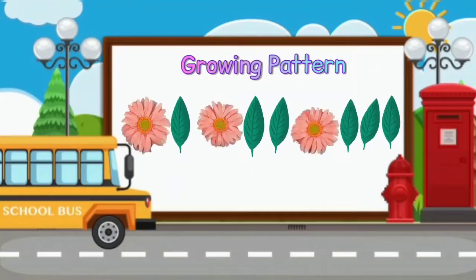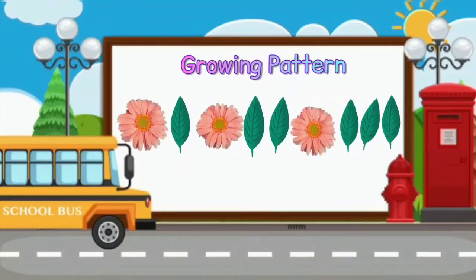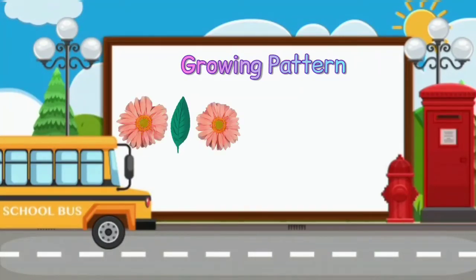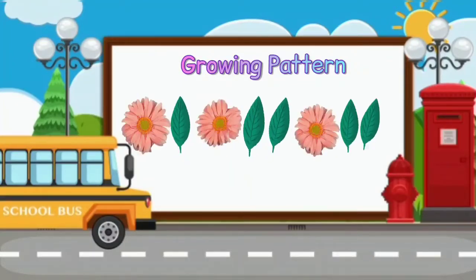Did you guess the rule for this pattern? We see that it starts with one flower and one leaf. How does it continue? The rule is to add one more leaf every time the sequence repeats itself. Add one more extra leaf every time.